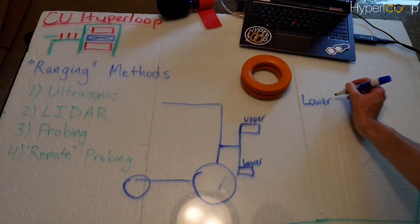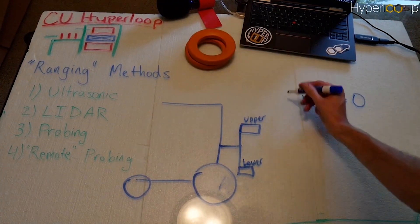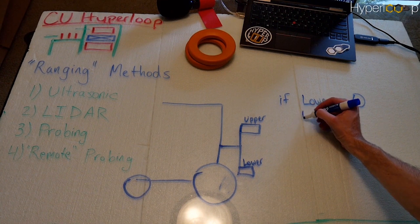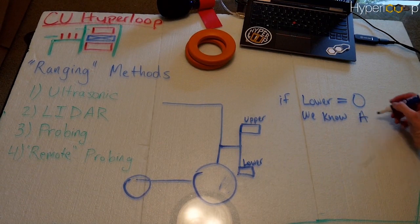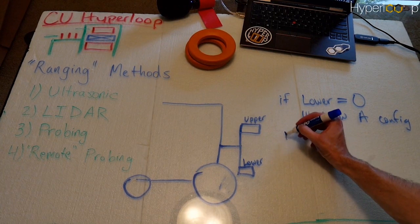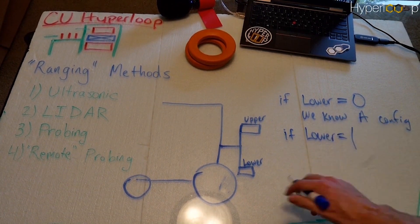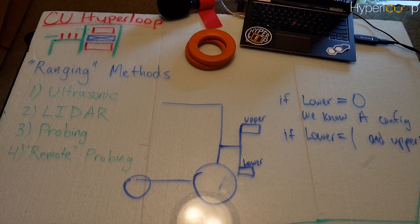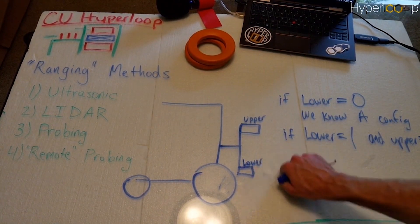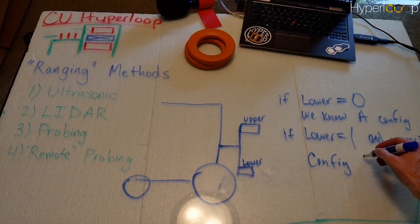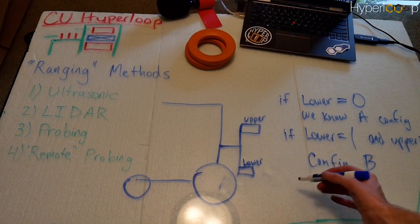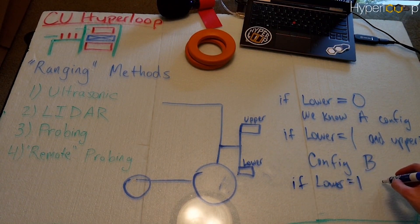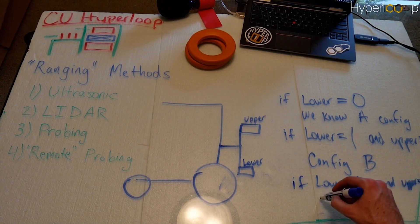Basically what we can say is if we call this our lower sensor and this our upper, if lower was zero, then obviously there's nothing there. So we know we're in the A configuration. If lower is one, so if we see one there, and upper is zero, then we know that we see something here, but we don't see anything up here. So obviously then we're in configuration B. And finally, if it's any other configuration, obviously we know we're in C. But to be thorough, if lower was one and upper was one, then obviously we're in configuration C.